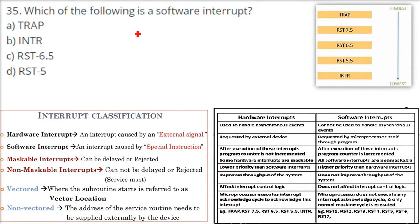Which of the following is a software interrupt? There are two types of interrupts: hardware interrupt and software interrupt. Hardware interrupt comes from an external signal — some hardware is giving the interrupt. A software interrupt is a special instruction which comes as a result of the software itself, the language itself, or the program itself.